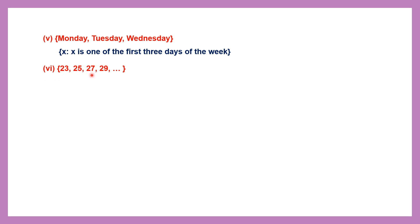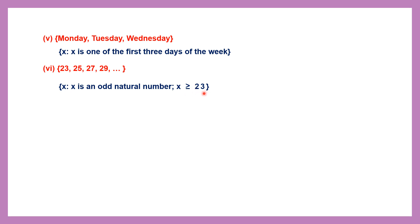Question 6: 23, 25, 27, 29. These are all odd numbers, starting from 23, but we don't know where they end. So they're all odd numbers from 23 onwards. We write: x is such that x is an odd natural number and x is greater than or equal to 23. Since we don't have an ending number, we don't say it's less than some number. So the condition is: x is an odd natural number and x is greater than or equal to 23.